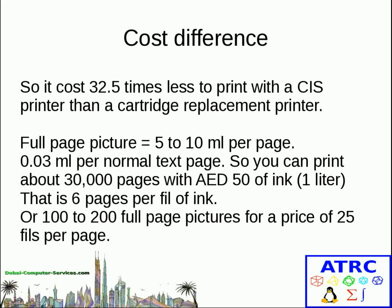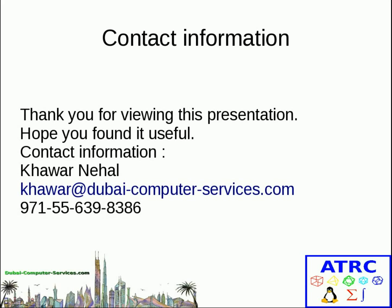It costs 32.5 times less to print with a CIS printer than with a normal cartridge printer, and 32 times is a huge difference. For example, a full page picture uses 5 to 10 mL of ink per page, while a normal text page uses a very small amount like 0.03 mL. With a liter of ink you can print around 30,000 text pages, or 100 to 200 full-page pictures at 1400 dpi. That comes to about 25 fils per page — like 1 dirham for 4 pages — which is pretty good.